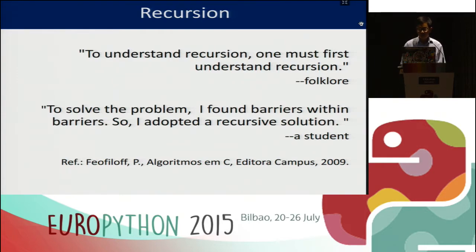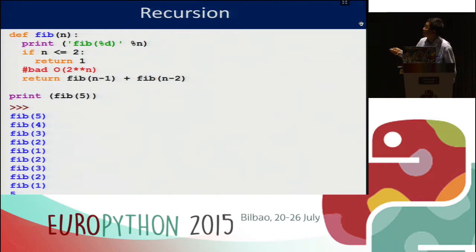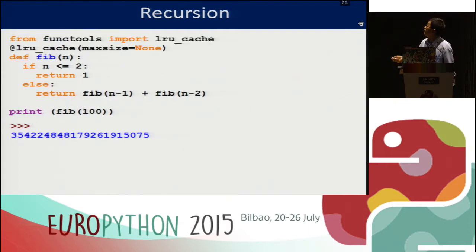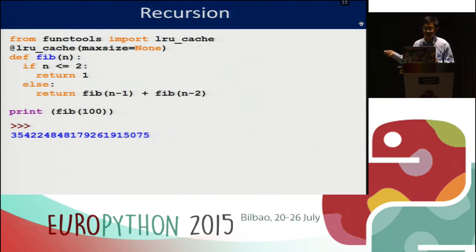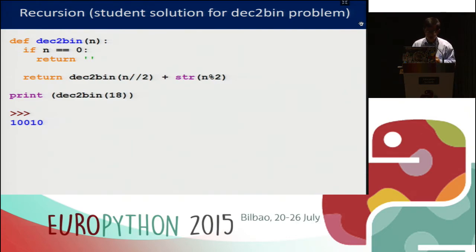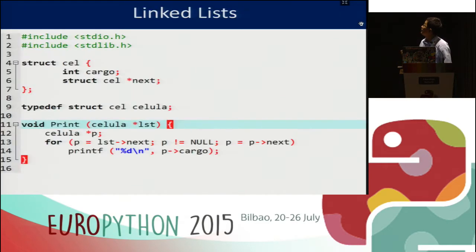Recursion — to understand recursion, you must first understand recursion. Fibonacci has a performance problem with naive recursion. We solve this using a dictionary, for example. Python has an LRU cache. We can also show this high-level approach to students. Students create some solutions to dynamic programming problems because of the dynamic aspect of Python's types.